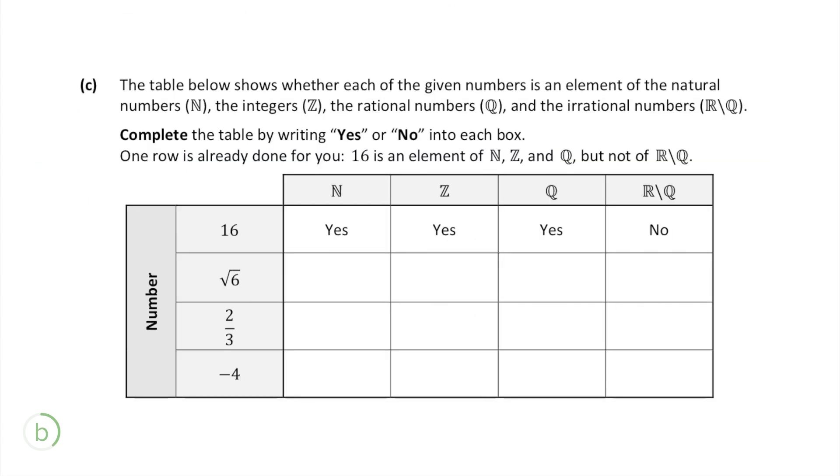Moving on to part C we have to say whether each of these numbers is an element of the natural numbers, the integers, the rational numbers or the irrational numbers. The first line is already done for us.